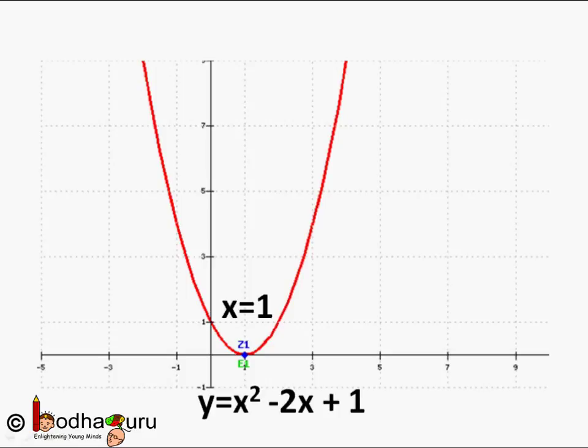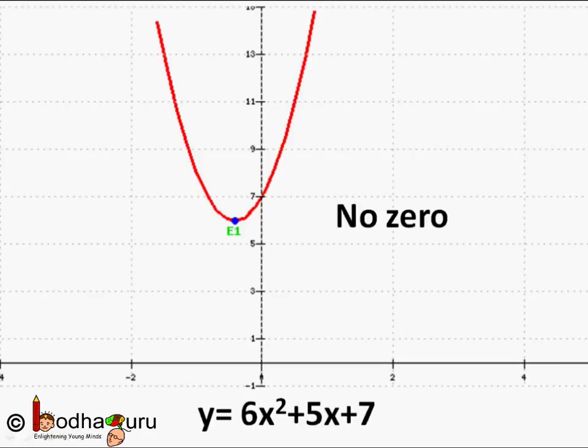But you would never find a quadratic polynomial which has more than two zeros. That is, quadratic polynomials will always have less than or equal to two zeros. But do all quadratic polynomials have zeros? For example, 6x² + 5x + 7. If you draw the graph of this polynomial, you would see that it would never ever intersect the x-axis. That is, no value of x makes y = 0. The lowest point of this graph is also above the x-axis. This means this polynomial has no zero. So we can say quadratic polynomials will have less than or equal to two zeros, but they will never have more than two zeros.